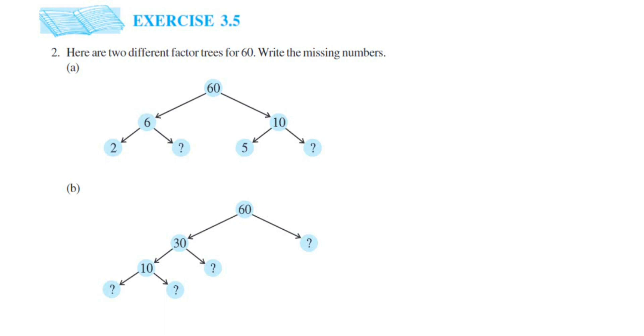Hey everyone, here I am doing Exercise 3.5, question 2. This is from the Playing with Numbers chapter of Class 6. The question is: here are two different factor trees for 60, write the missing numbers.